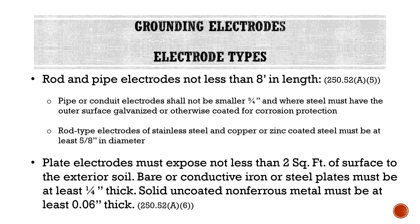Plate electrodes must expose not less than 2 square feet of surface to the exterior soil. Bare or conductive iron or steel plates must be at least 1/4 inch thick. Solid, uncoated, non-ferrous metal must be at least 0.06 inches thick. Once again, these requirements pertain to plate electrodes.